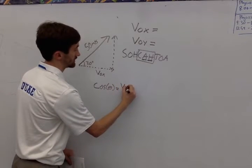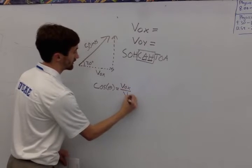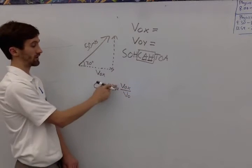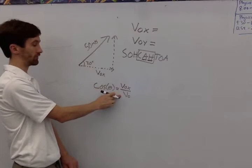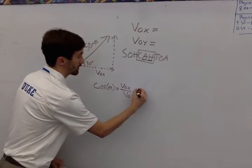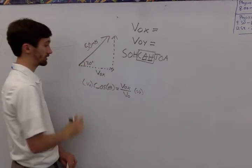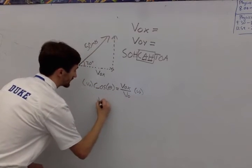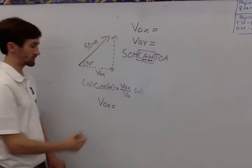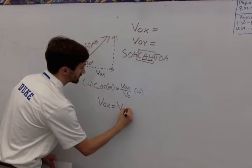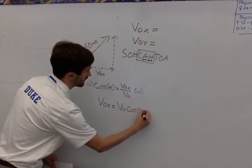So I write that the cosine of the angle is equal to the adjacent side divided by the total, or the x velocity divided by the total velocity. And then if I multiply both sides by the total,